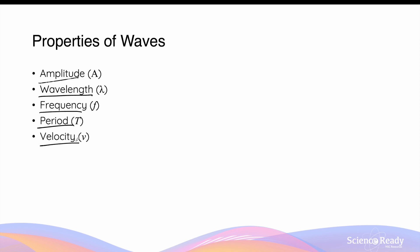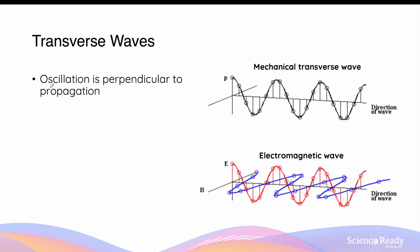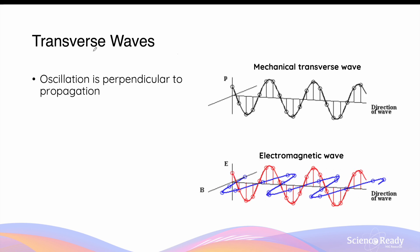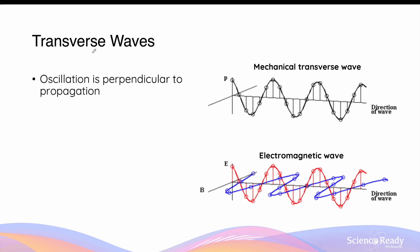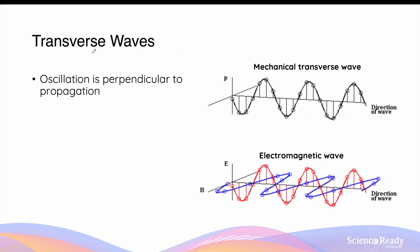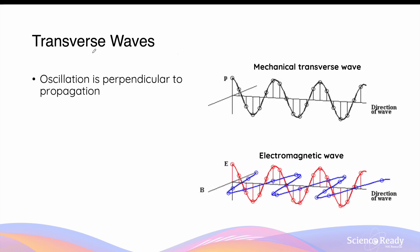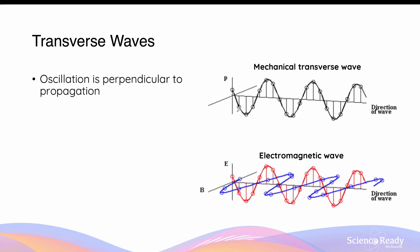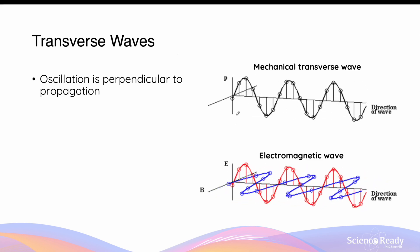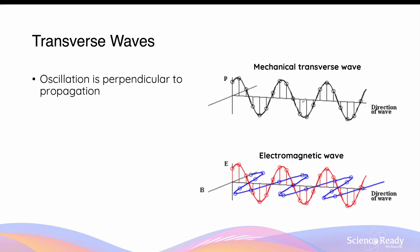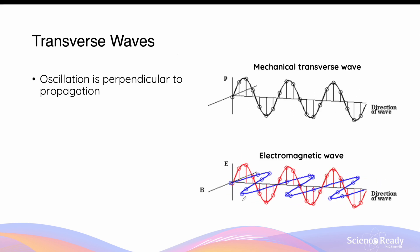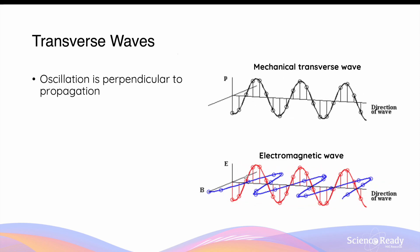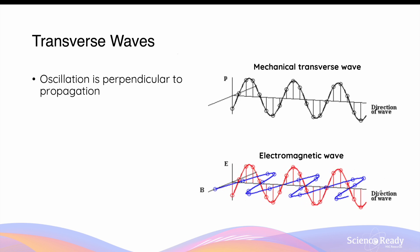These properties of longitudinal waves will be discussed separately in a different video. By way of review, transverse waves are ones where the oscillation direction — that is, the direction in which the particles, or the electric and magnetic fields, are oscillating — is perpendicular to the direction of the wave's propagation. For mechanical waves, the direction of particles' oscillation will be perpendicular to the direction of travel of the wave itself, and for electromagnetic waves, the direction of oscillation of both the electric and magnetic fields are perpendicular to the direction of propagation of the wave.